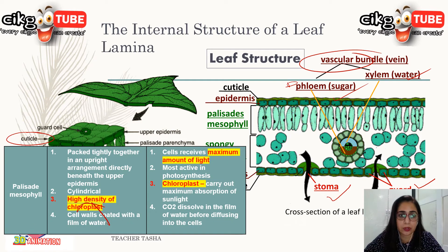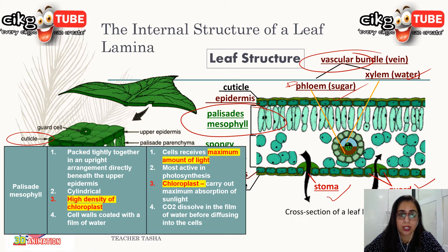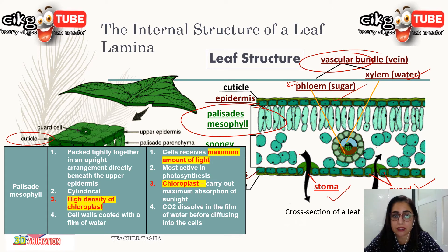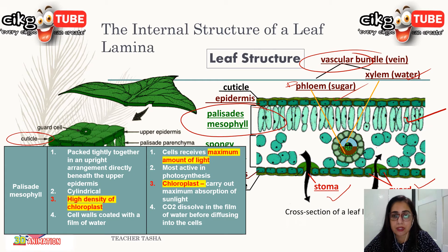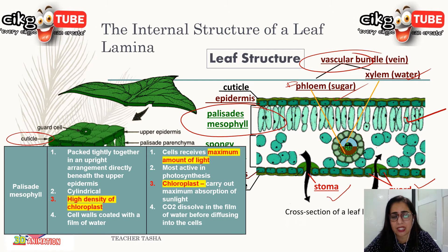The palisade mesophyll consists of palisade mesophyll cells that are closely packed together. It is located right below the upper epidermis, which enables the cells to obtain maximum sunlight. Each cell contains the largest number of chloroplasts, so most chloroplasts are found in the palisade mesophyll cells, for maximum absorption of sunlight to carry out photosynthesis.